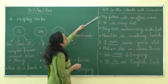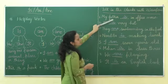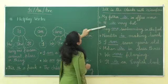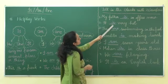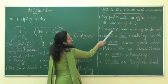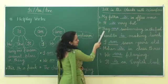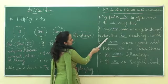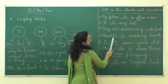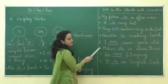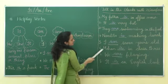Let's revise. Number one: My father is in office now — 'father' is a singular noun so we use 'is'. Number two: It is very hot — 'it' is a singular pronoun, we use 'is'. Number three: They are swimming in the pool — 'they' is a plural pronoun, we use 'are'. Number four: Nandita is making lunch — Nandita is a single girl, so we use 'is'.